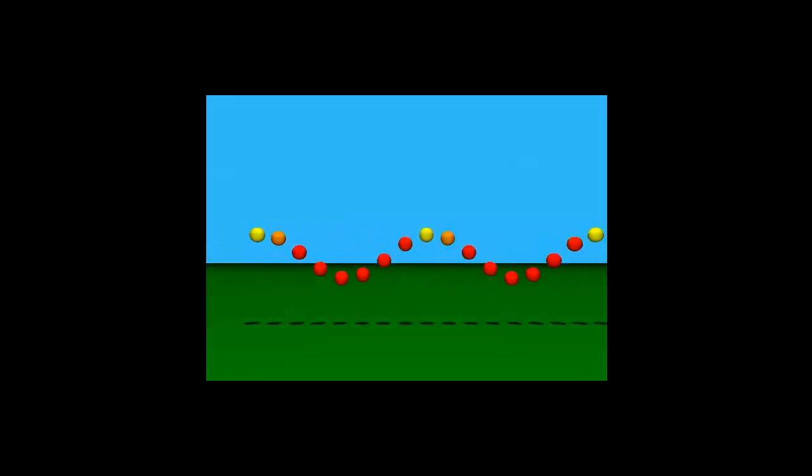The transverse wave is one in which the particles of the medium, demonstrated by the spheres in this animation, travel up and down only, even though the wave moves to the right.